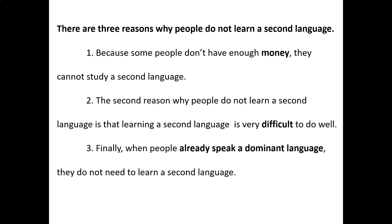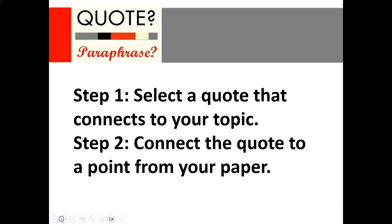In the United States there are sometimes free English classes, but in other countries English or second-language classes can be very expensive. Number two: learning a second language is very difficult to do well. And finally, number three: when people already speak a dominant language, they do not need to learn a second language. Those are the three reasons why some people are not bilingual or multilingual.